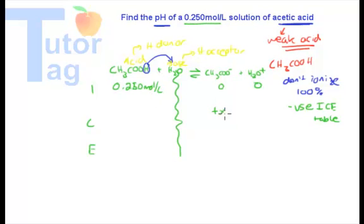We then add plus X here and plus X there. We don't know how much we're increasing it by, and the change here is minus X. So your equilibrium will be 0.250 minus X, and here will be 0 plus X, which is X, and 0 plus X, which is X.